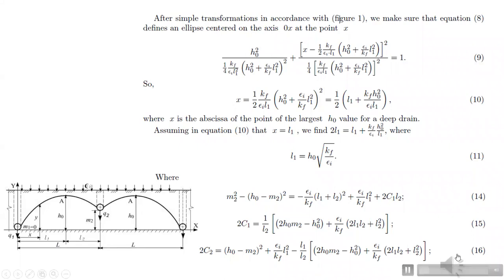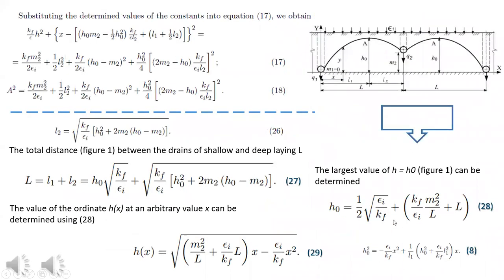Next, we take into account several boundary conditions taken from the adapted design scheme. By solving the resulting quadratic equation, we obtain the following dependencies for groundwater movement according to the adopted scheme. The total distance between shallow and deep drains is shown in equation 27. The largest value of h, equal to h₀, can be determined by equation 28.